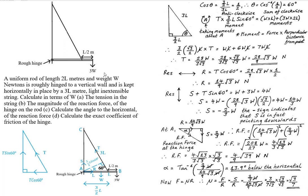There is also a weight hanging at the other end of the uniform rod of magnitude 3W. The light inextensible string is attached to the rod at L/2 meters from that end, and the other end of the string is attached to the vertical wall. The tasks required are: firstly, calculate the tension in the string; secondly, the magnitude of the reaction force of the hinge on the rod; part C, the angle to the horizontal of the reaction force; and part D, the exact coefficient of friction of the hinge.